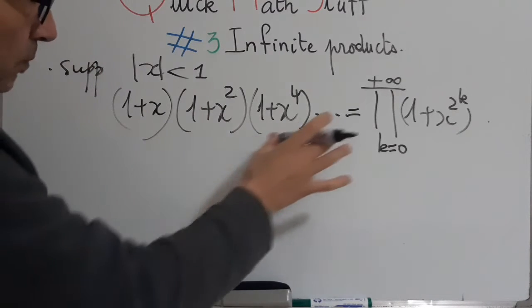By induction, you will find that this is 2^(n+1). So we will obtain that the finite product of (1+x^(2^k)) from 1 to n is equal to (1-x^(2^(n+1)))/(1-x).